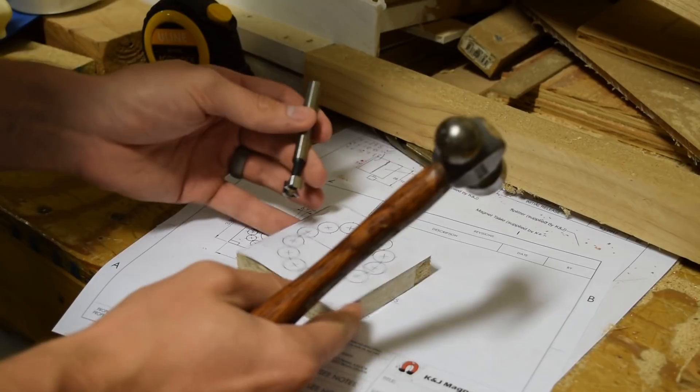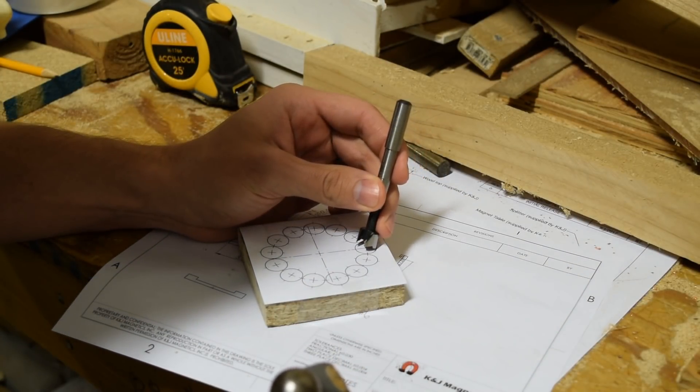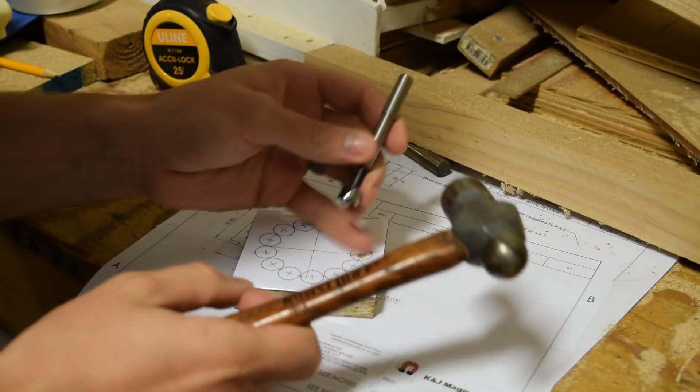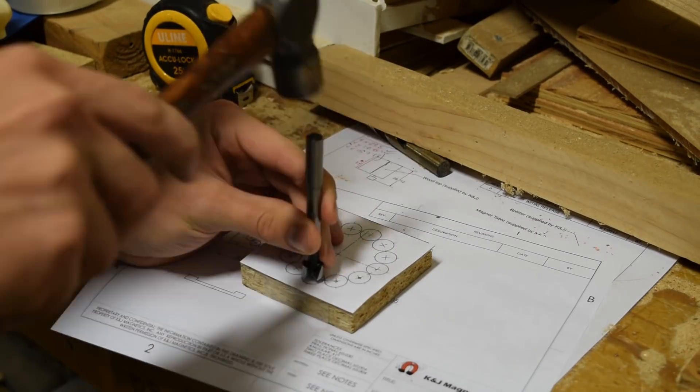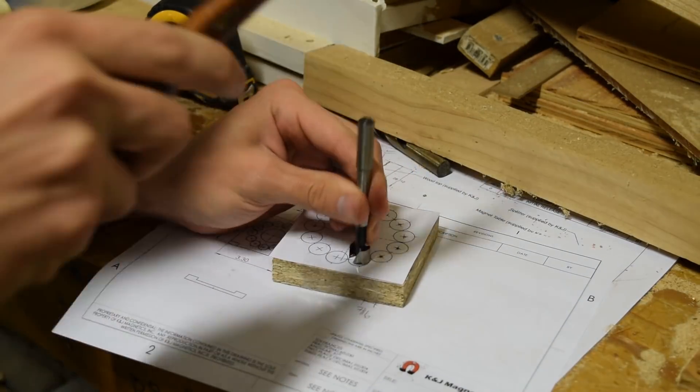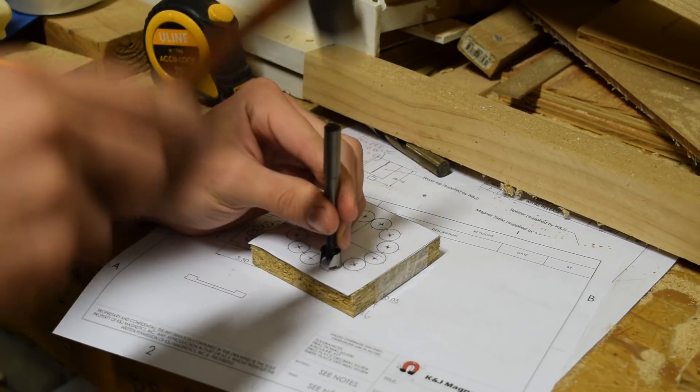Then I tape the layout to the block of wood and use my Forstner bit to make a mark where the center of the hole is going to go. This step isn't needed, but it's helpful when you go to the drill press. I'm using a half inch Forstner bit here, and that's what I'll use to drill the holes.